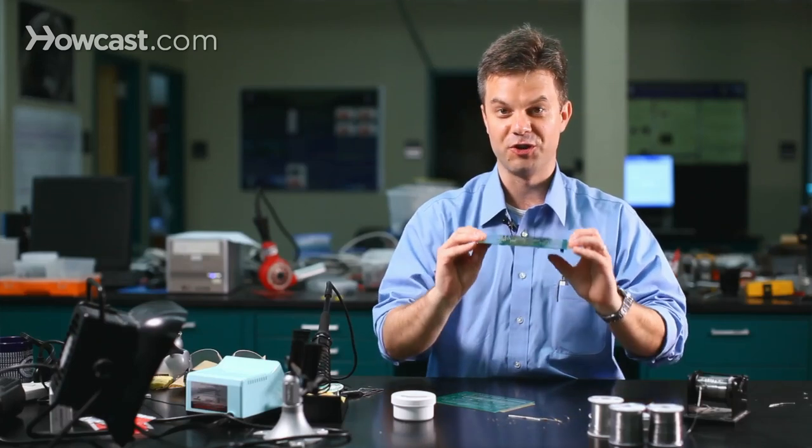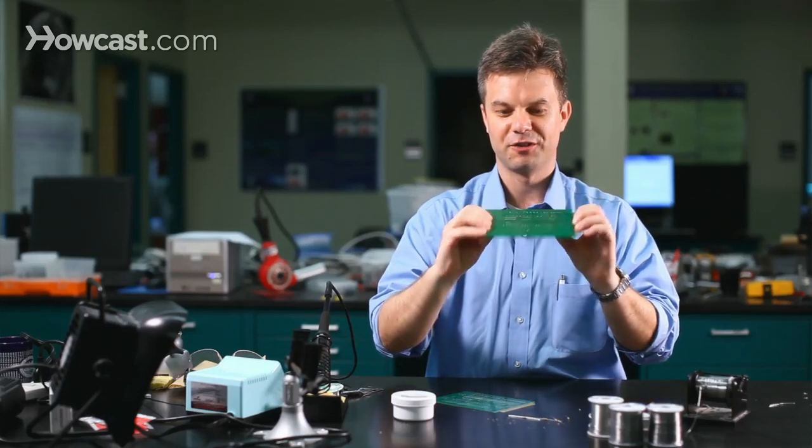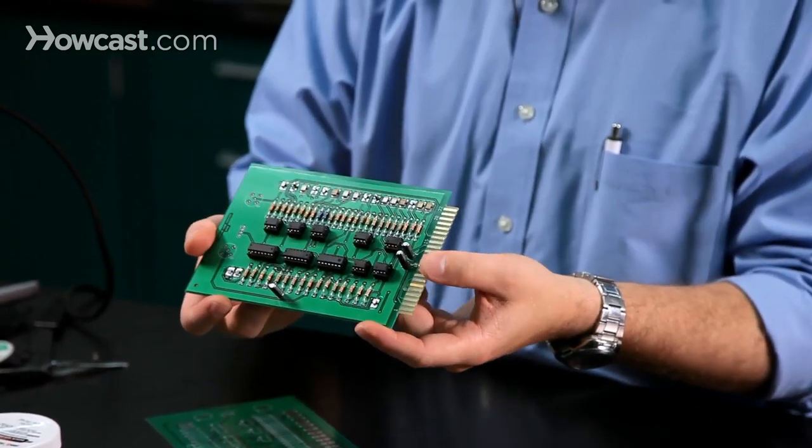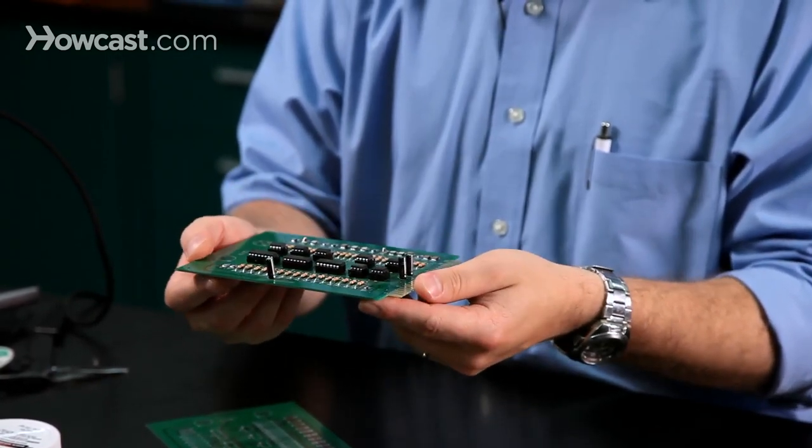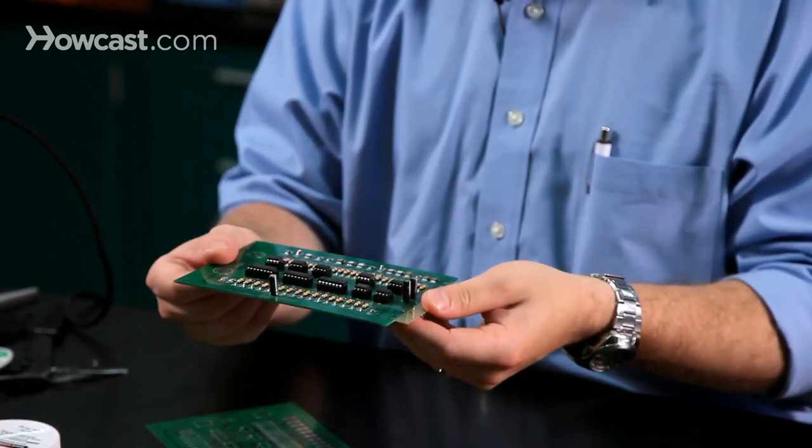Now, FR4 circuit boards are rigid. They don't bend very much. Alternative printed circuit board materials, such as polyimid, are available today, which allow for one to make a flexible circuit.